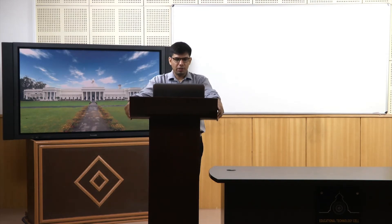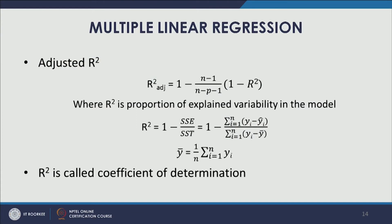Adjusted R-squared can be defined using this formula: 1 minus (N minus 1) divided by (N minus P minus 1), where P is the number of predictors and N is the number of observations, multiplied by (1 minus R-squared), that is the multiple R-squared.